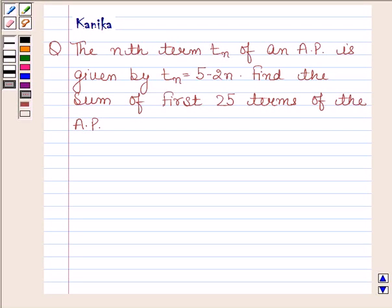Hi and welcome to the session. Let us discuss the following question. The question says that the nth term tn of an AP is given by tn equals 5 minus 2n. Find the sum of first 25 terms of the AP.